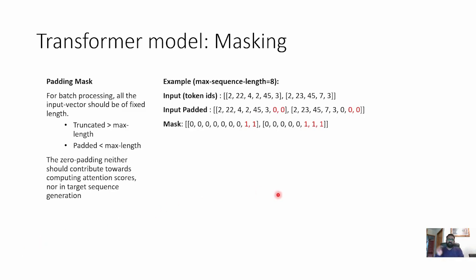For max sequence length we could have two situations. First, we fix the max sequence length which is hard-coded — here we fix max sequence length at 8, everything greater than that is truncated and everything less than that gets a padding token. Here you can see we have two input samples: the first one is of length 6 and the second one is of length 5, and we added two padding tokens (id zero) to the first and three zeros to the second. When generating the mask, we mark the padded positions with ones — two ones for the first and three ones for the second.